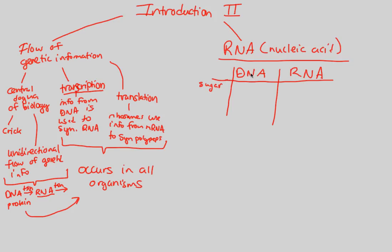The first feature we'll look at is the sugar. Remember, a nucleic acid has a sugar, phosphate, and a nitrogenous base. The sugar in DNA is deoxyribose — that's why it's called DNA. RNA, on the other hand, has simply a ribose sugar. It's a five-carbon sugar. So we have the sugar difference covered.